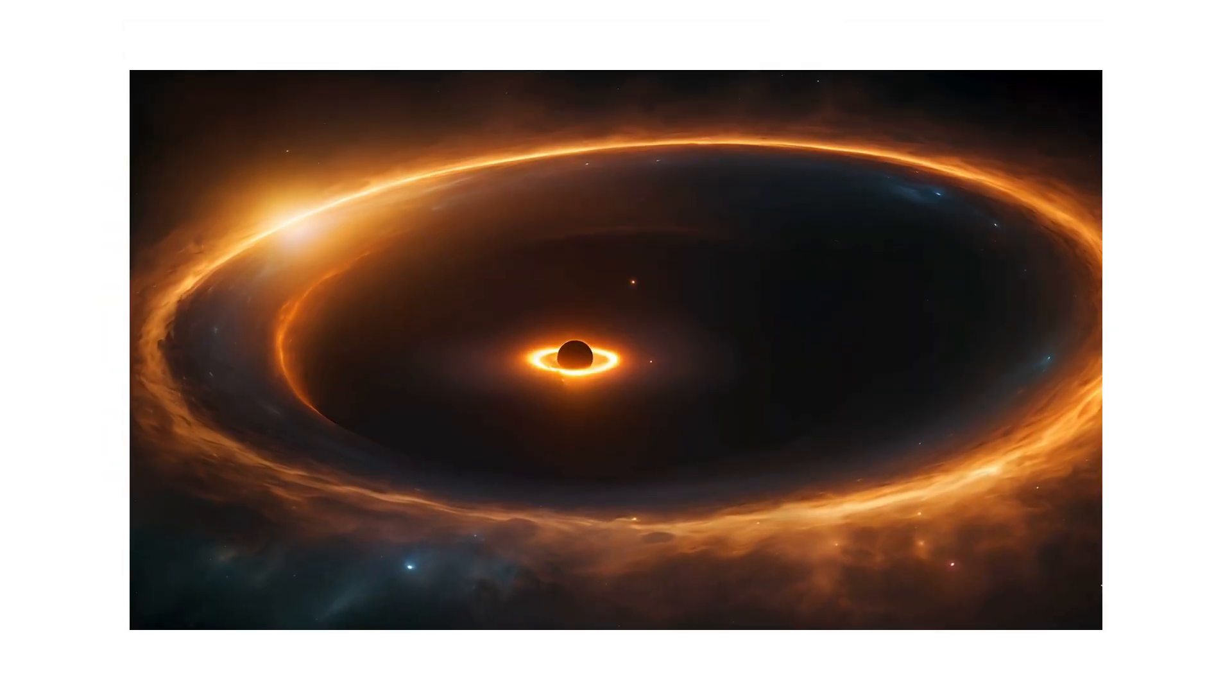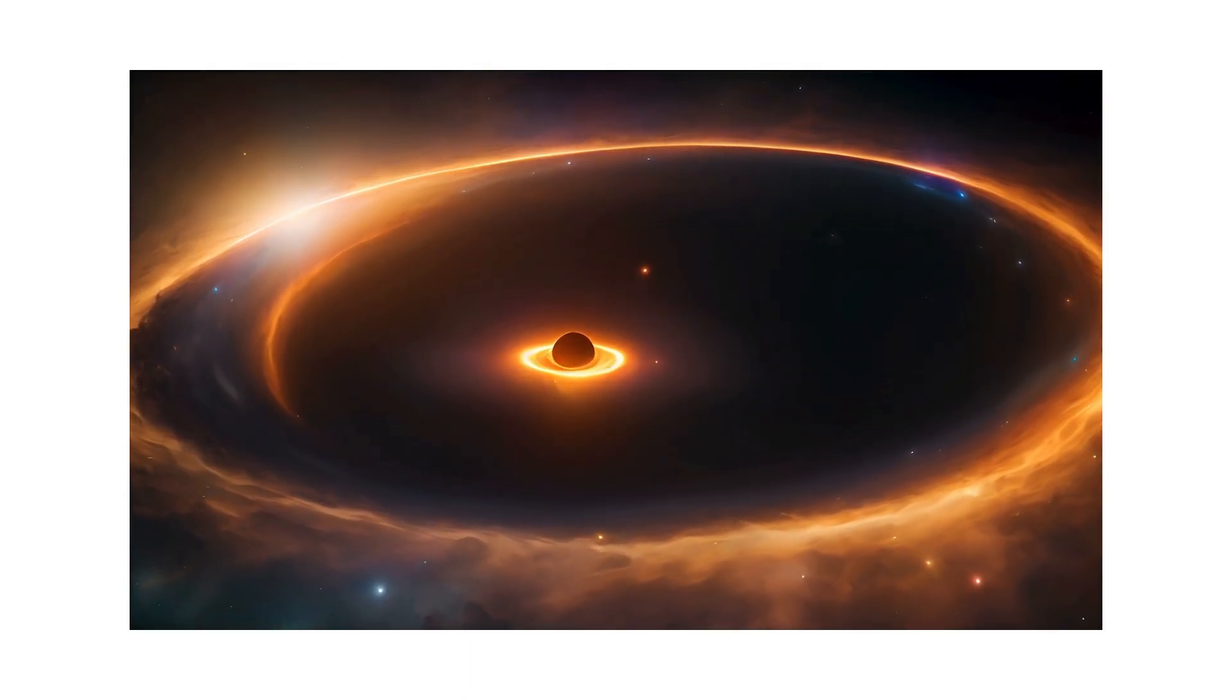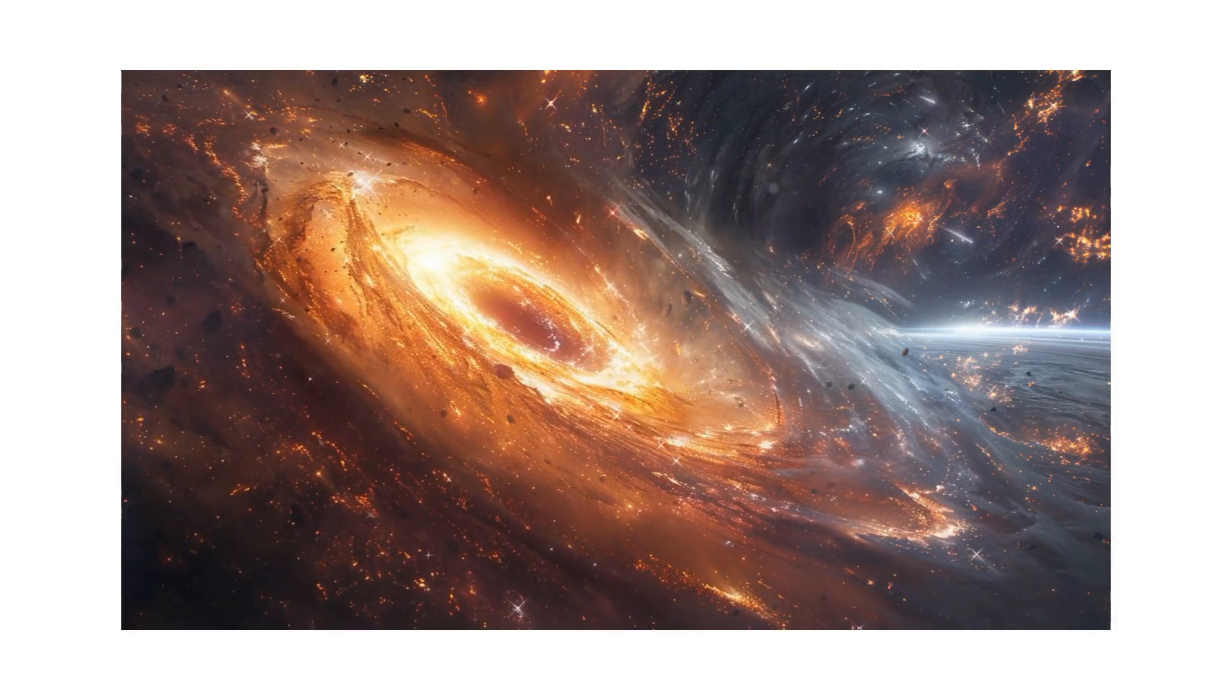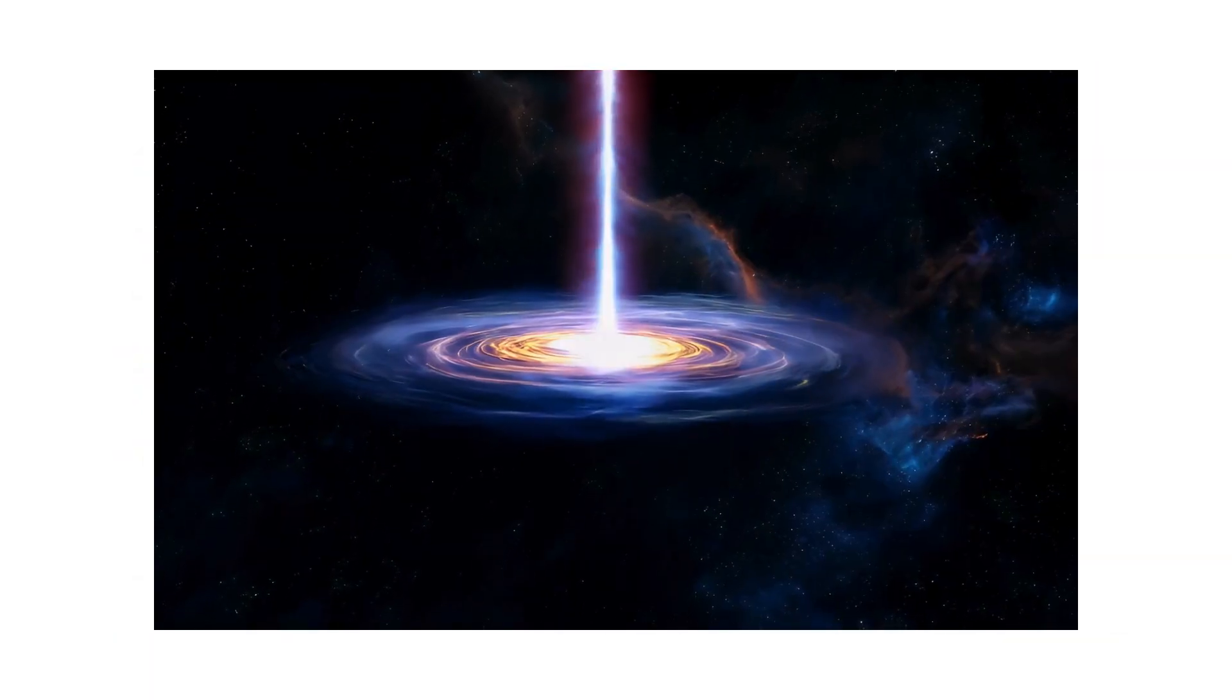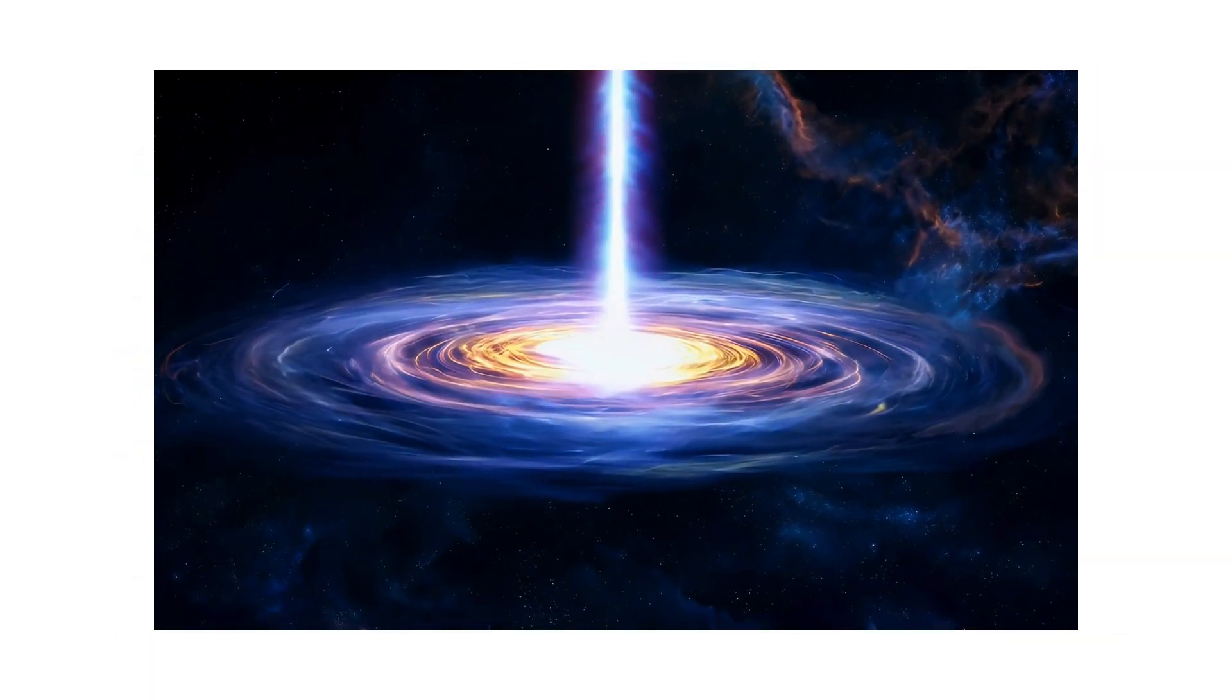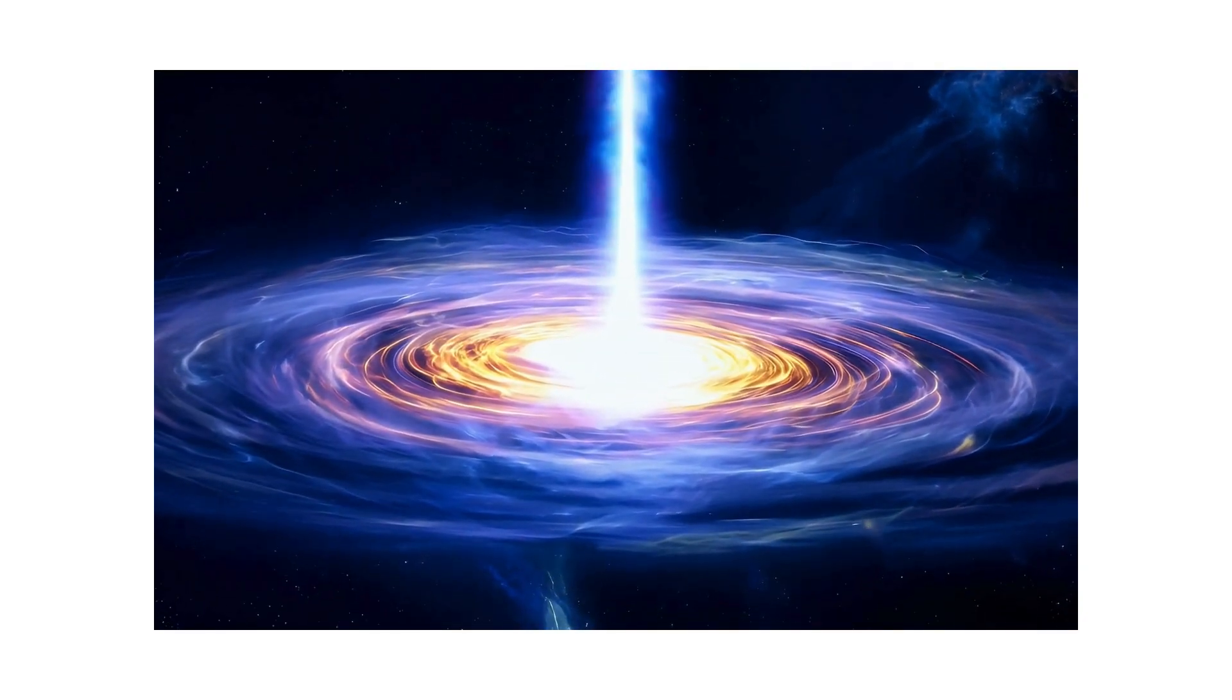If a rogue black hole passed close to the solar system, its gravitational influence could disrupt the Oort Cloud, the vast reservoir of icy bodies at the edge of our system. This disturbance would send comets hurtling inward, dramatically increasing the risk of large impacts on Earth. A more direct approach could perturb planetary orbits, destabilizing the inner solar system over time.